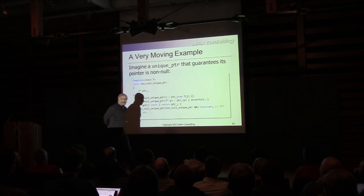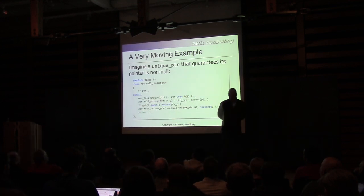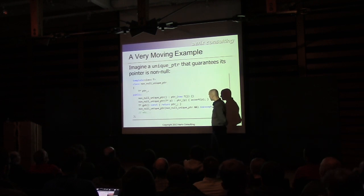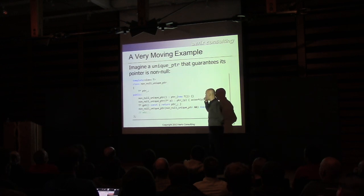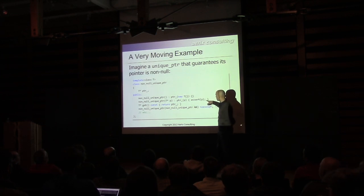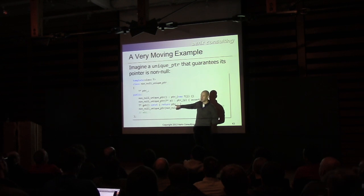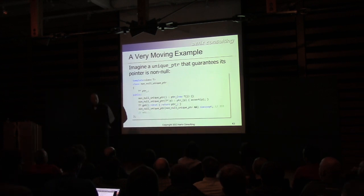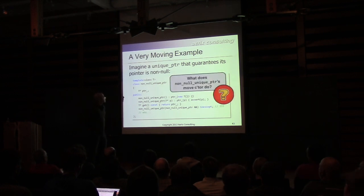Let's motivate this with an example: designing a 'non_null_unique_ptr' type. It should be obvious what this does — you default-construct it by allocating an object so it can never be null, or you bind one and assert it's not null. You can call get() without checking whether the pointer is null because you know it's not null — you haven't allowed that. Now comes time to implement the move constructor, because it's a unique pointer and should be movable.